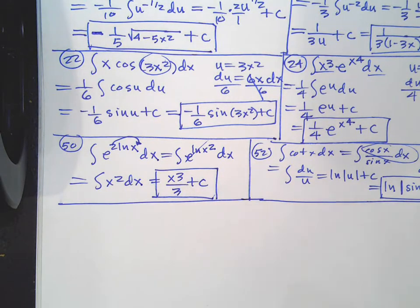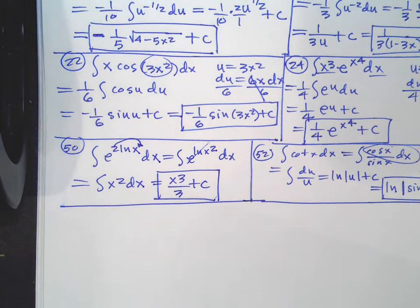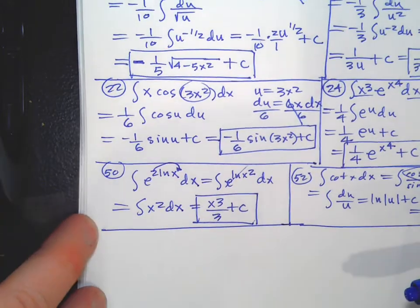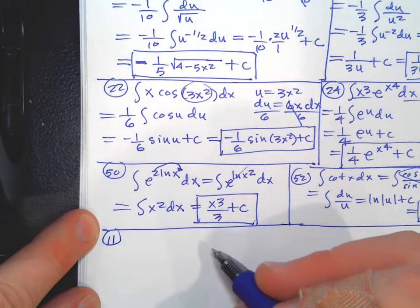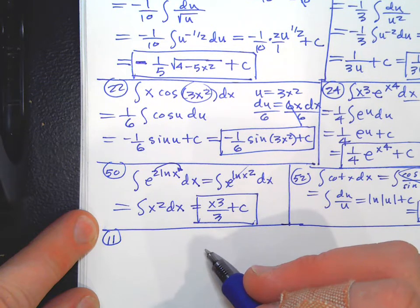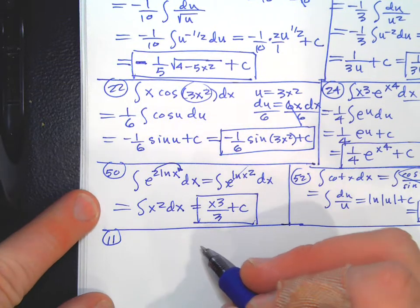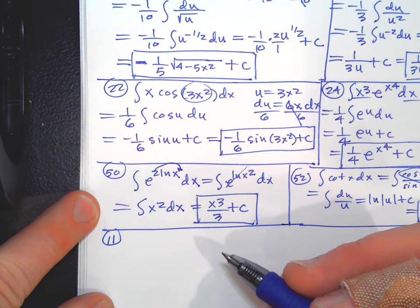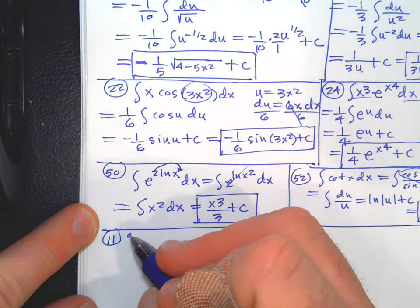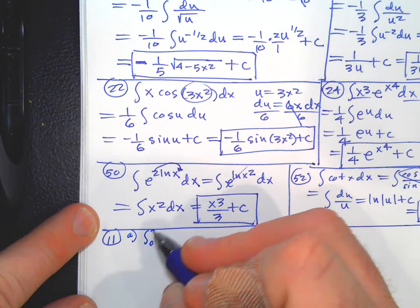Those were the problems from page 393 — more practice with indefinite integrals. Now we're looking at page 414 to start doing definite integrals. Problem 11 says: sketch the region whose signed area is represented by the definite integral and evaluate using appropriate formulas from geometry where needed. On problem 11 part a, we're integrating from 0 to 3 of x dx — that's just a line; we can graph it.